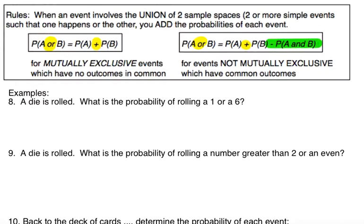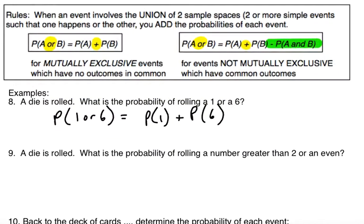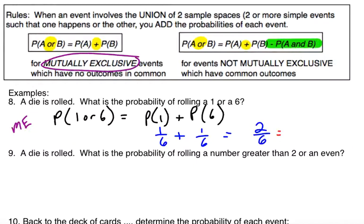We're rolling a regular six-sided die. What's the probability of rolling a one or a six? Probability of one or six is going to be probability of one plus probability of six. Do I need to subtract any overlap? Is there a one and a six on the same side? It's one or the other — there is no overlap. This is what we consider mutually exclusive. So I take the probability of each — one out of six plus one out of six — giving me two out of six, which reduces to one-third.